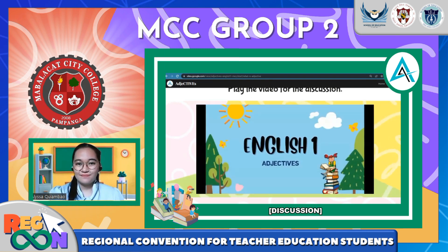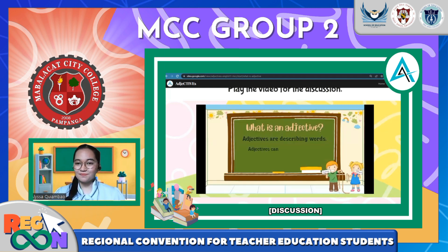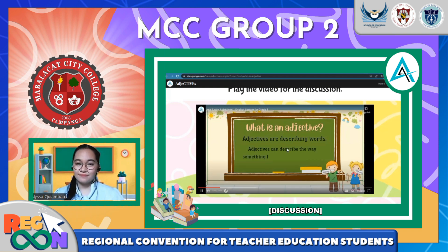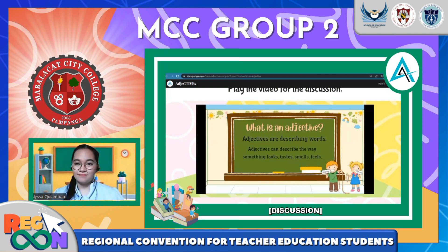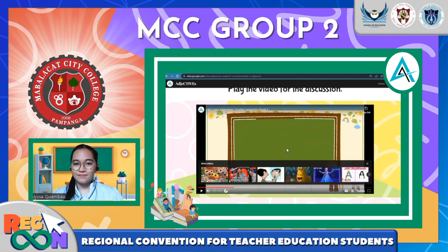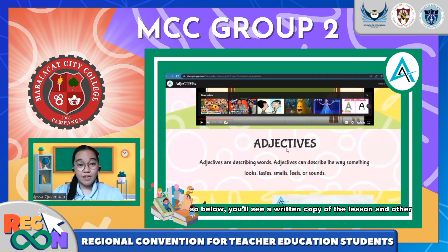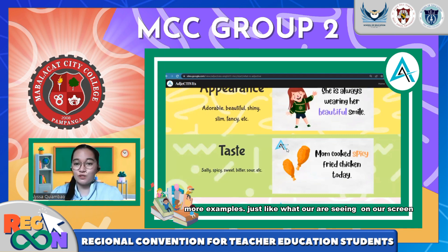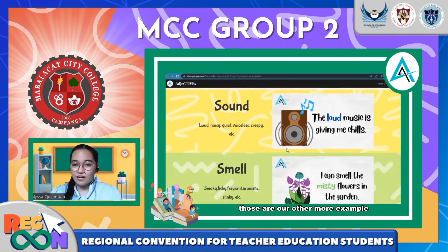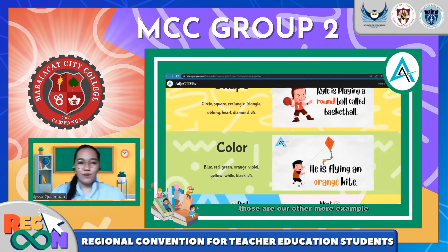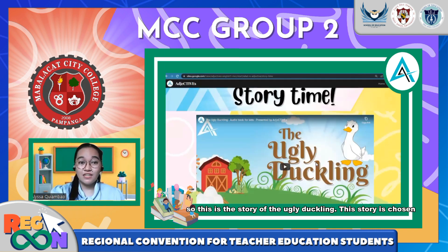Good morning children, how are you doing today? We are going to talk about adjectives. So what is an adjective? Adjectives are describing words. Adjectives can describe the way something looks, tastes, smells, feels, or sounds. That is just a sneak peek of the video. Below you will see a written copy of the lesson and more examples just like what you are seeing on our screen.